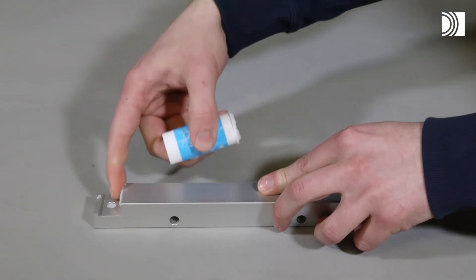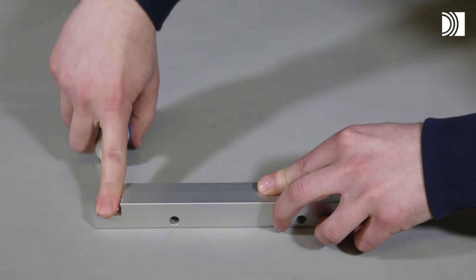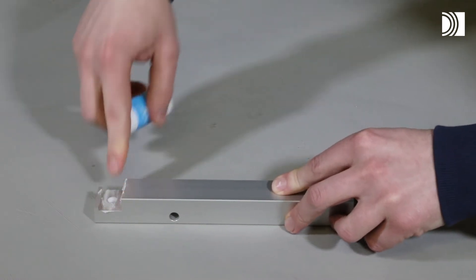Lubricate the contact surfaces of the lower long part and the two short parts with Roxtec lubricant blue.